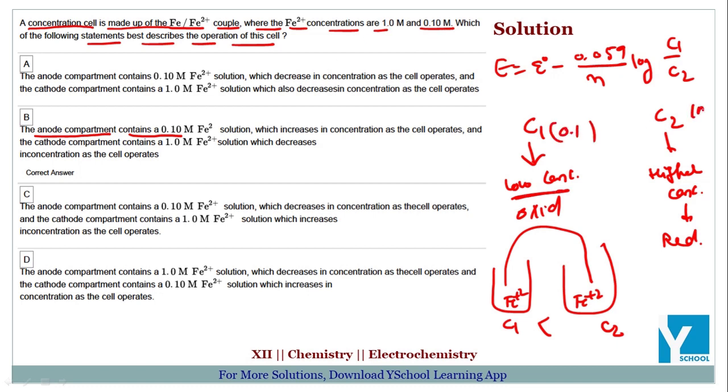High concentration is 1M, c1 is 0.1M low concentration. So anode - oxidation. The anode compartment contains 0.1 molar Fe²⁺ solution which increases in concentration as the cell operates.